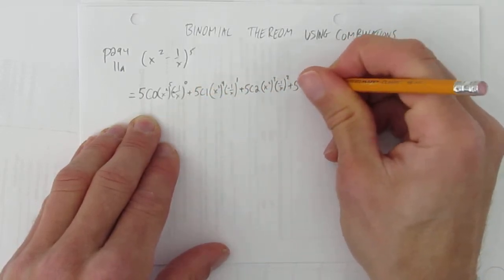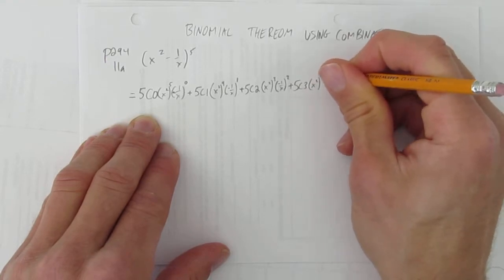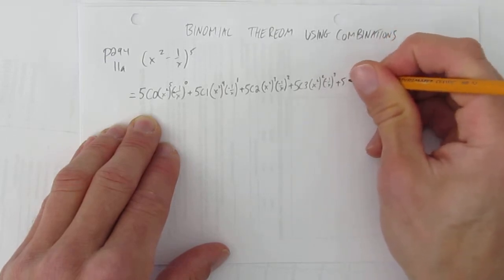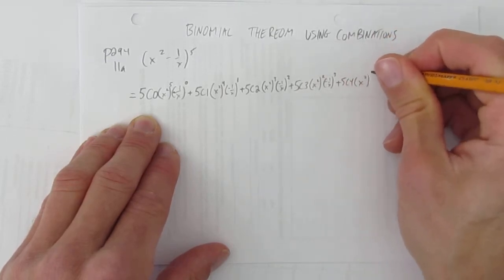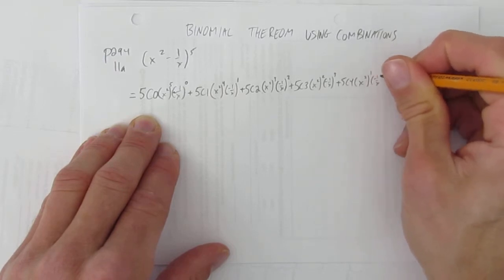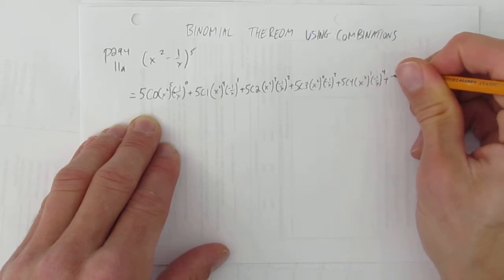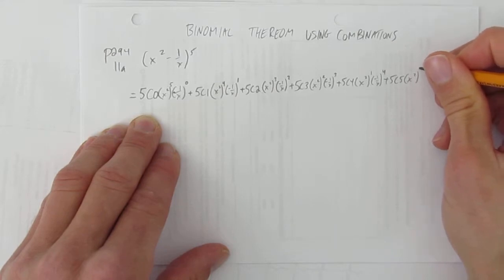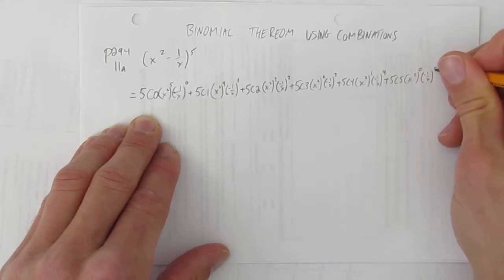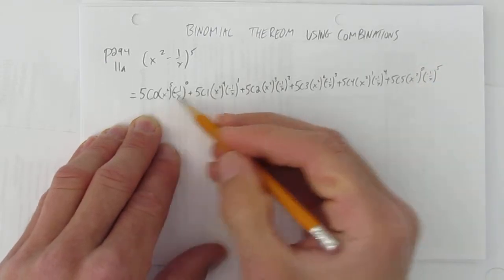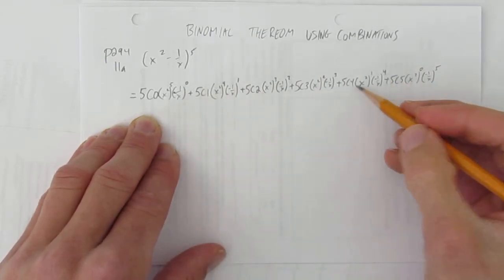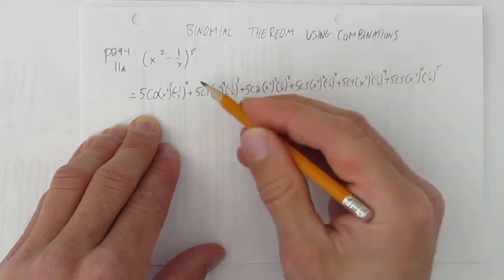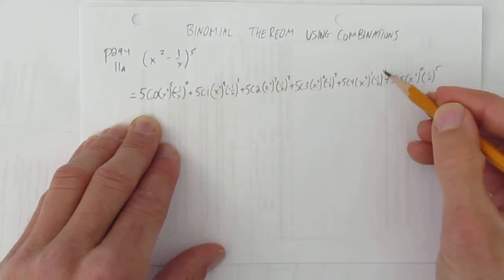So let's keep going. Now it's five choose three — first thing in the brackets counts down, second thing counts up. Five choose four — first thing counts down, second thing counts up. Last term: five choose five — first thing is now at zero, second thing is now at five. And here it is again: five choose zero, five choose one, five choose two, five choose three, five choose four, five choose five. First thing in the brackets counting down from five down to zero; second thing in the brackets counting up from zero up to five.